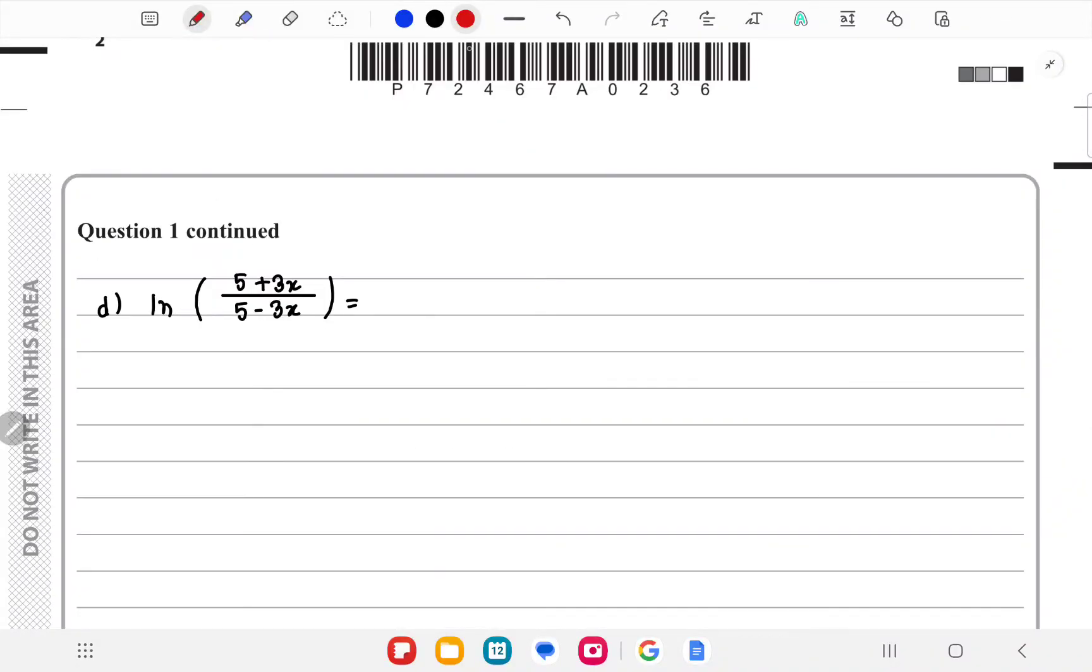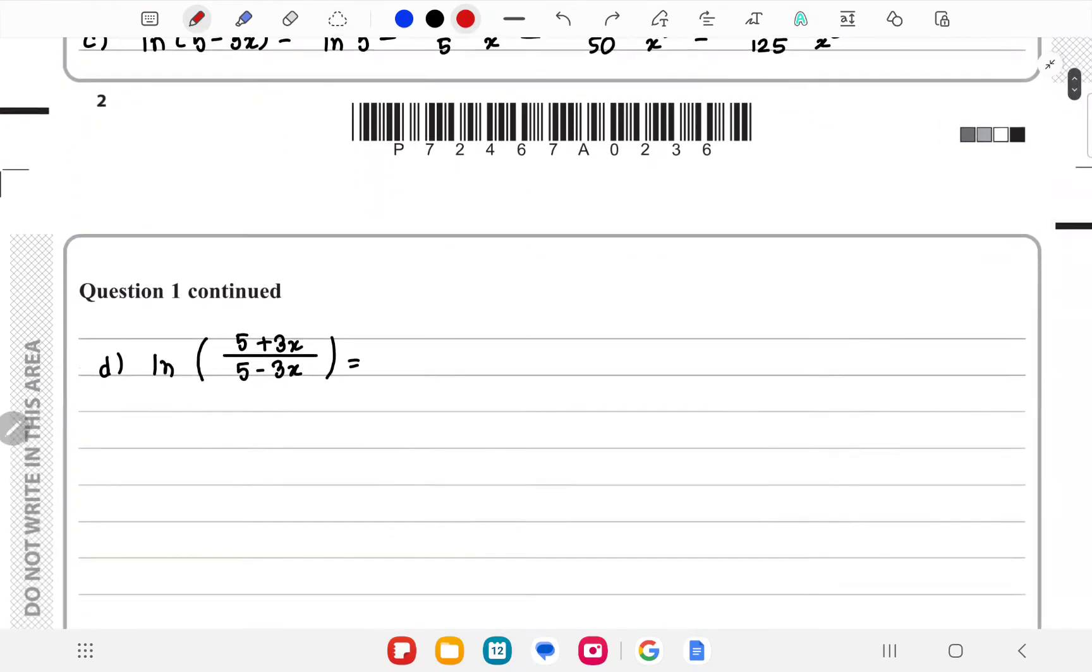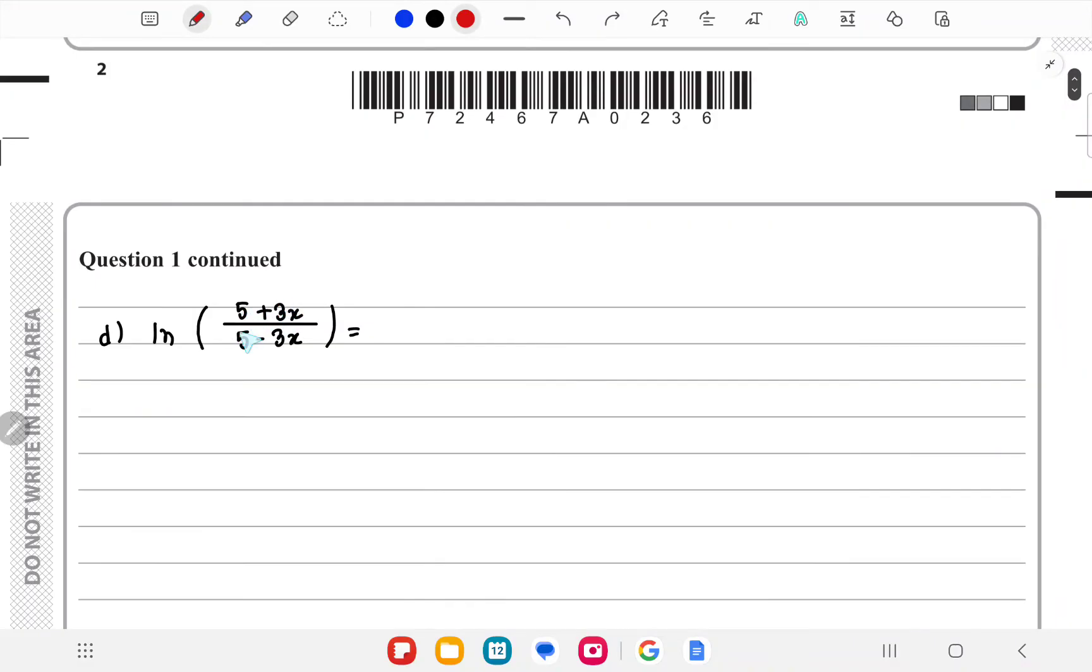Now in part d they want this expression: ln[(5+3x)/(5-3x)]. We already know ln(5+3x) and ln(5-3x) separately. And using the logarithmic rules, we know that we can write this expression like this.